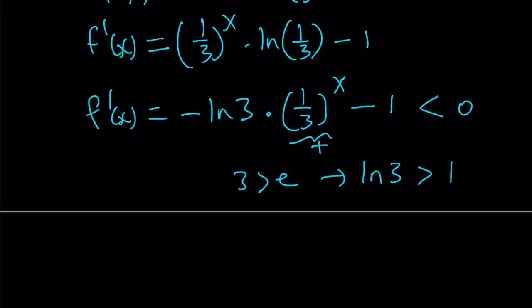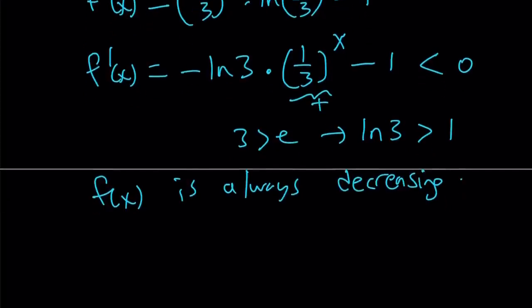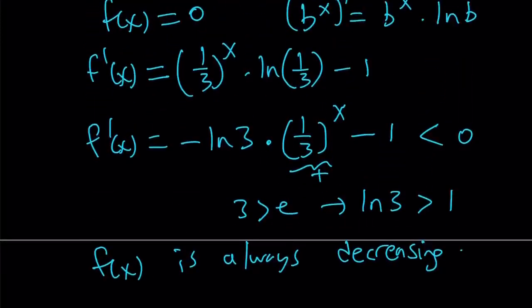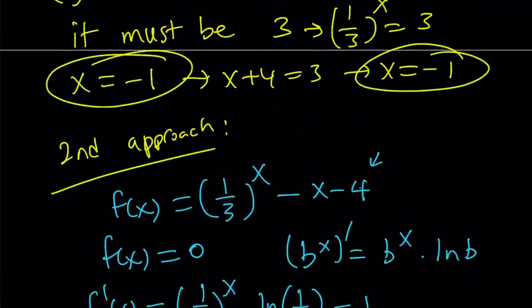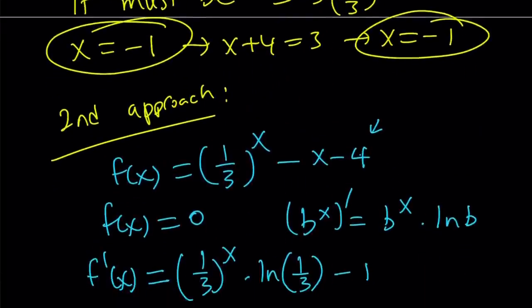Which means that your function is always decreasing. f of x is always decreasing, meaning that it can only intersect the x-axis at a single point and you can easily guess that solution which we already did. We said that, yes, x equals negative 1 must be the only solution.